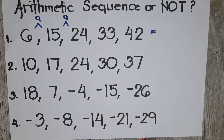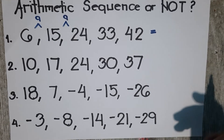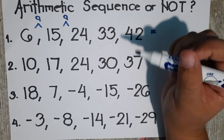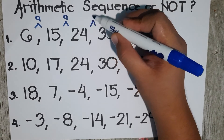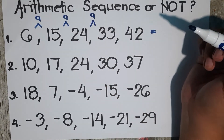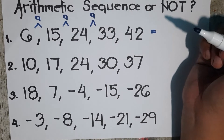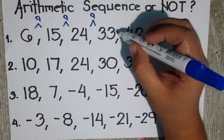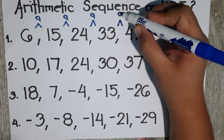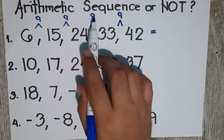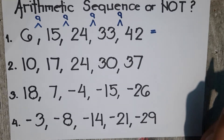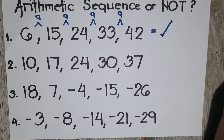We'll have to check everything because something could be different along the way. From 24 to 33, the common difference is also 9, because 24 plus 9 is 33. And finally, from 33 to 42, the difference is 9 as well. Since the common difference for each term is the same, number one is an arithmetic sequence.